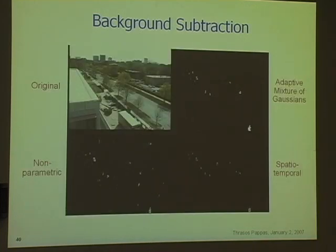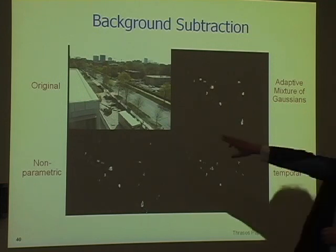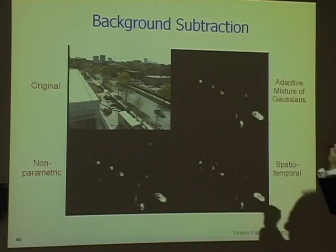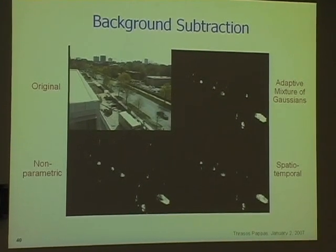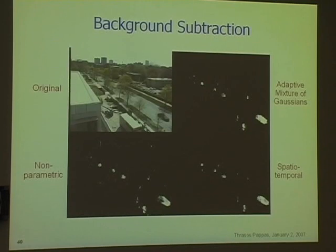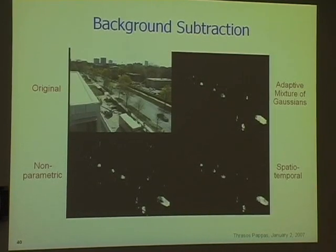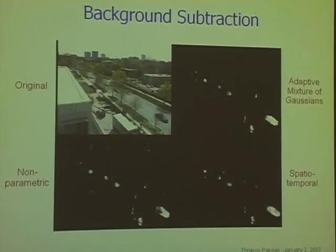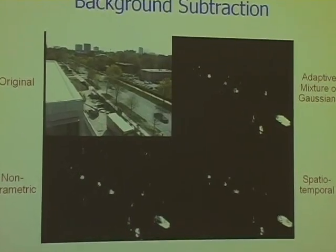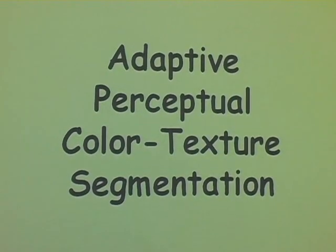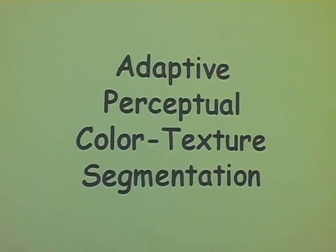Here's just another example — an outdoor scene. This is the new Ford Engineering building at Northwestern, and they had a camera there to record the construction, but we diverted the camera to get our data. That is interesting because the trees are outside and they move, and you want to detect the cars, not the trees. So now I can move to the texture.